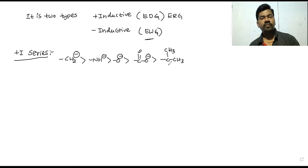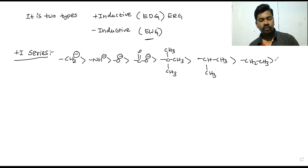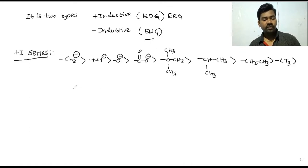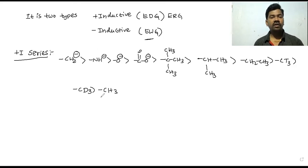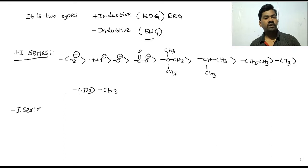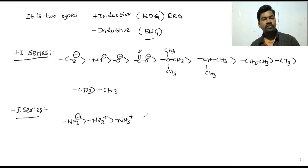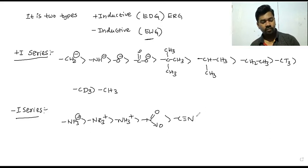In the plus I series, the alkyl groups such as CH3 (methyl), secondary and tertiary alkyl groups like CH3-CH3 and related structures are included. These alkyl groups are electron-donating groups showing positive inductive effect.